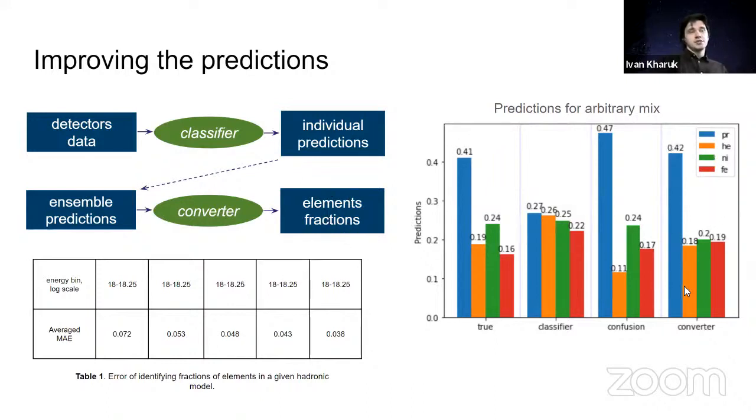The scheme of our analysis is as follows: we take detectors data, pass them through the classifier, we take an ensemble of events and thus obtain average predictions, then we take these average predictions, pass them through the converter, and thus obtain the fraction of elements in the ensemble. The results of the converter predictions are shown in the last column. As you can see, the accuracy is now much better. To estimate how accurate is our method, in fact we took 2000 ensembles and calculated directly the mean absolute error. We made it in different energy bins as our precision depends—sorry, there are somehow wrong numbers and I haven't noticed this before. This should be starting from 18.0 to 18.25, this should be 18.25 to 18.5, etc.